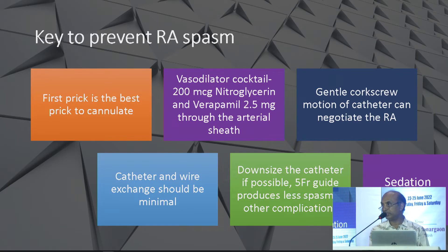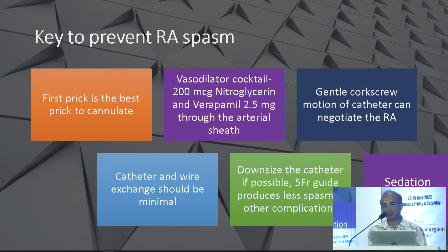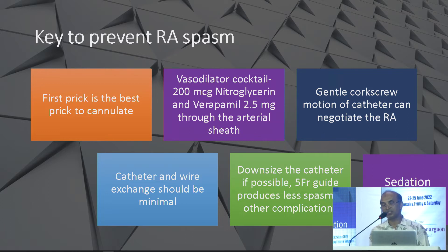The key to preventing radial artery spasm: first prick is the best prick to cannulate. Vasodilator cocktail — 200 micrograms nitroglycerin and verapamil 2.5 mg through the arterial sheath. Gentle corkscrew motion of the catheter. Catheter and wire exchange should be minimal. Downsize the catheter if possible — a 5 French guide catheter has less spasm and other complications. Sedate the patient, especially females who are very anxious.